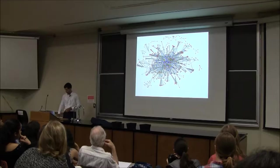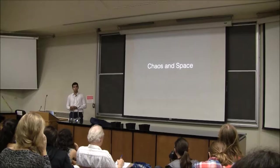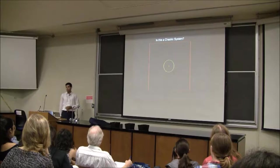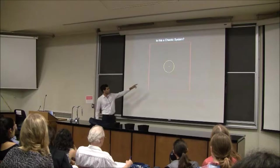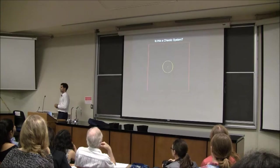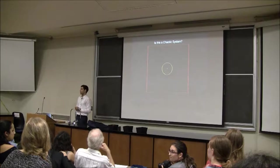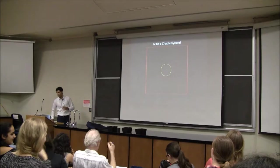Chaos in space. There are many different forms of chaos, but I'll give you the version applied to astronomy and space. This is the most simple system we can construct in space: a planet orbiting around a star. Is this a chaotic system? No, it is not a chaotic system. It is an integrable system.